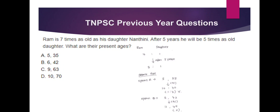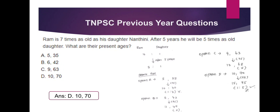Option B is 6 to 42. If you add 5 years, it gives 11 to 47 — it doesn't cancel out. Option C is 9 to 63. If you add 5 years, 14 to 68 simplifies to 7 to 34 — this is a valid option. The last option is 10 to 70. If you add 5 years, 15 to 75, which simplifies to 1 to 5. So option D is the answer.